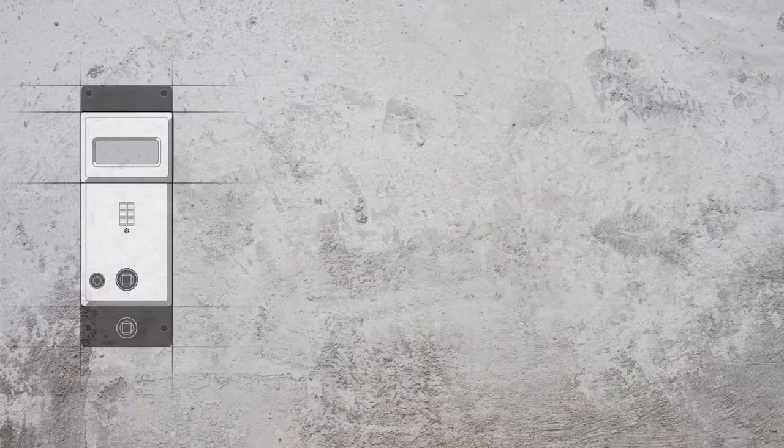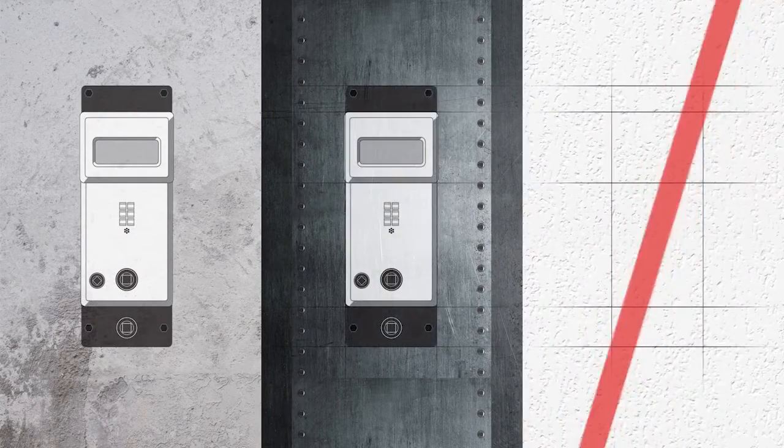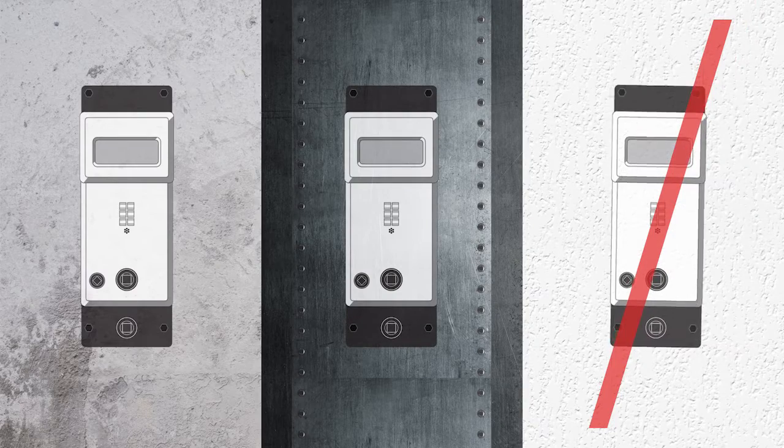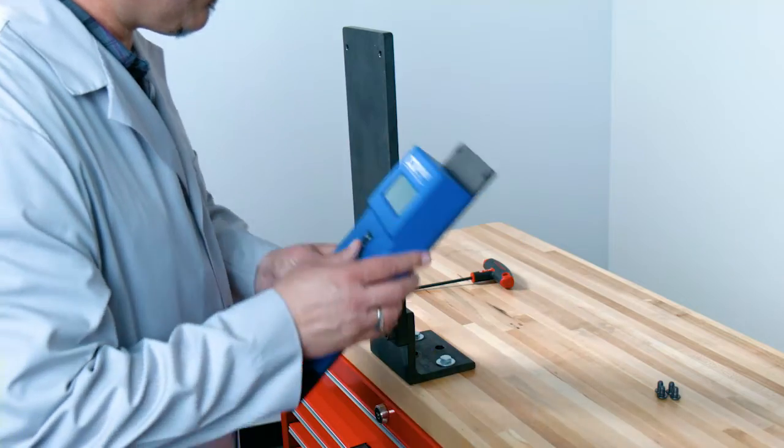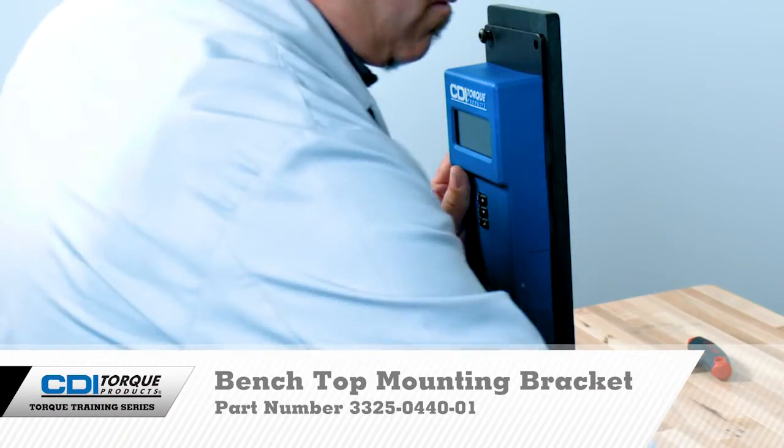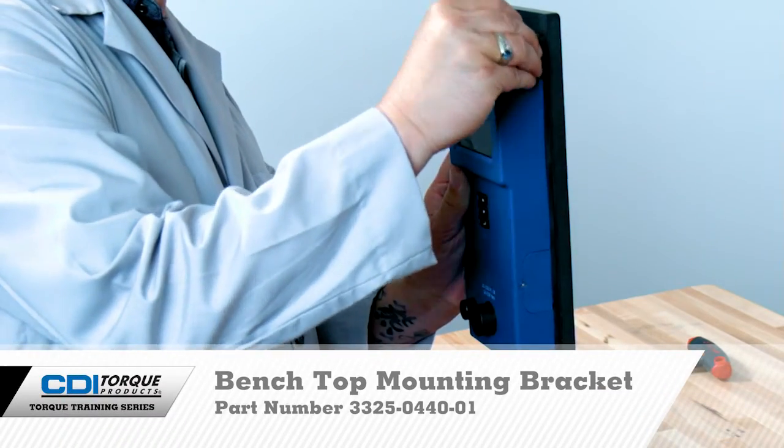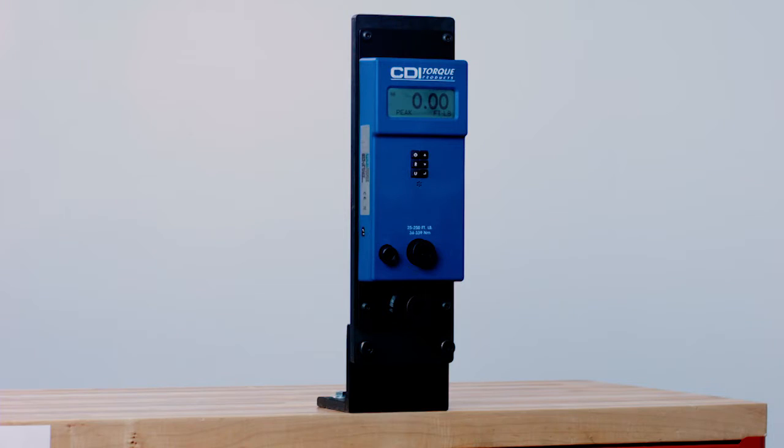Mount the DTC on a sturdy wall such as concrete or on a steel beam. Do not mount on unsupported drywall. For ease of use, mount the checker with the socket approximately waist-high to the user. Snap-on also has a bench top mounting bracket available for the DTC, part number 3325-0440-01.